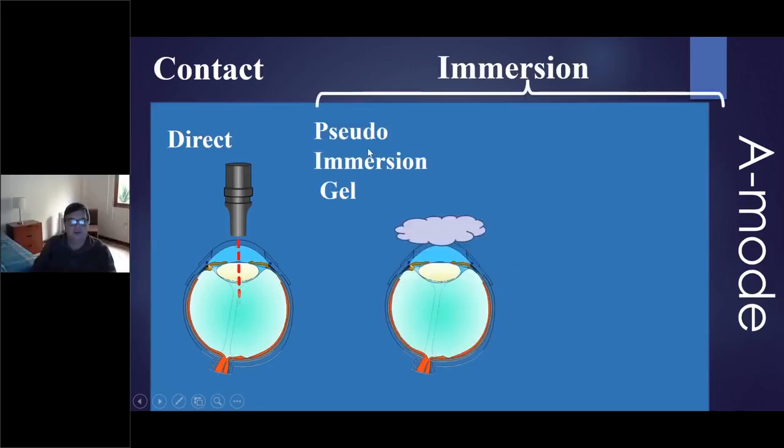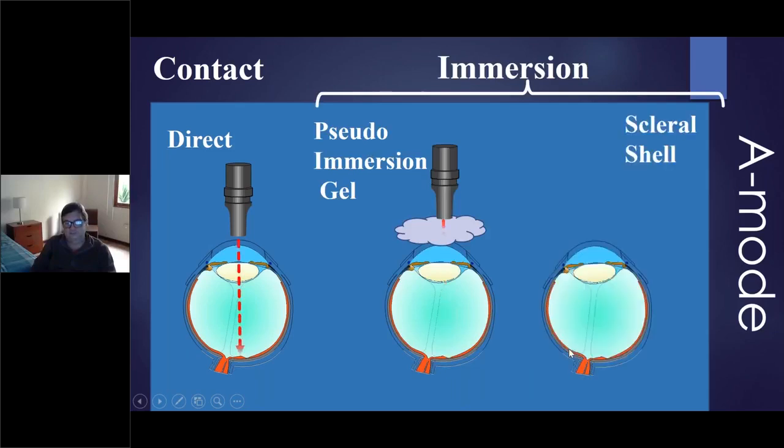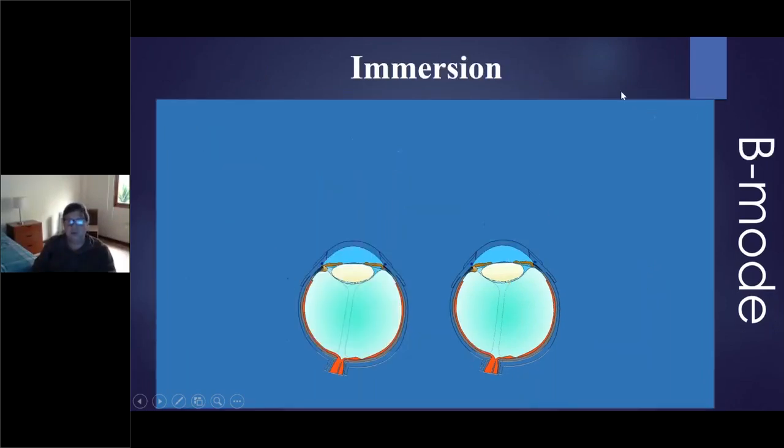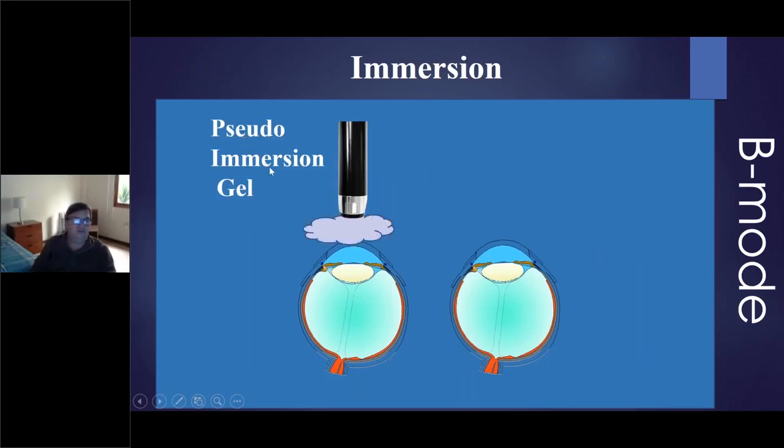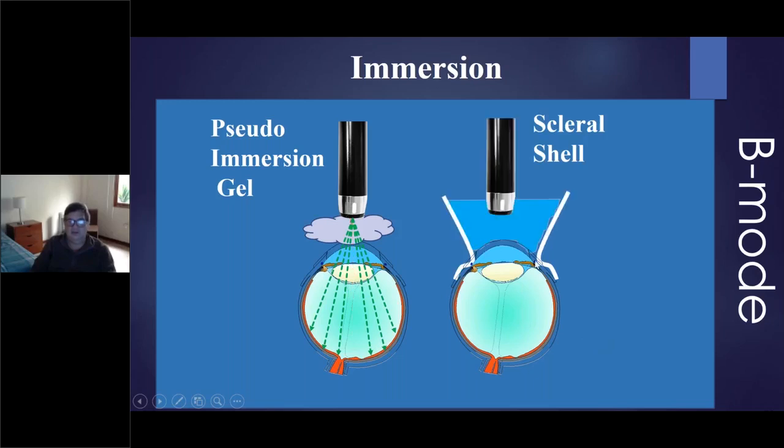In the A-mode, you have direct contact. You can use immersion, pseudo-immersion gel, and you can use the scleral shell as well. There are two immersions, one contact. Try to not use the direct mode, I mean the contact mode. I will show you why. And you have the immersion with B-mode. You can also use the pseudo-immersion gel, or you can use the scleral shell if you have it.